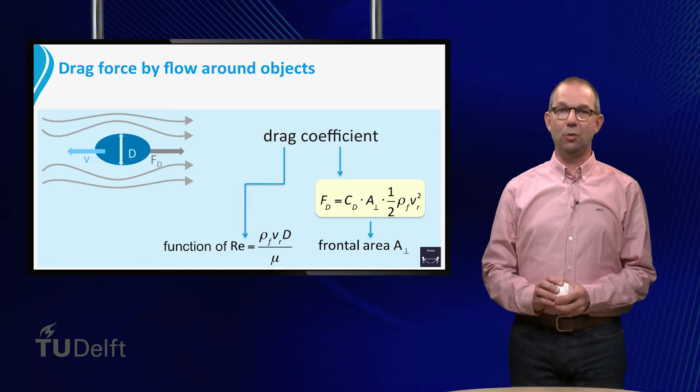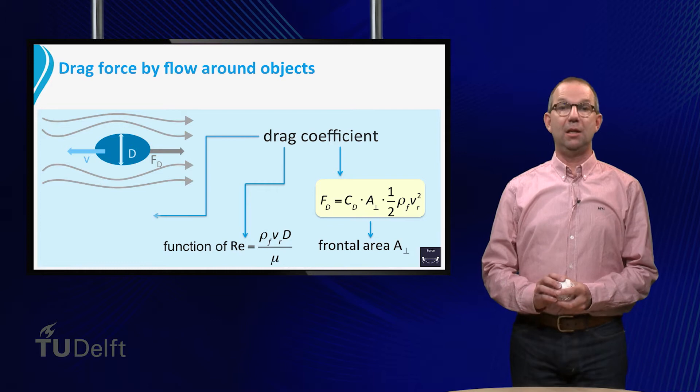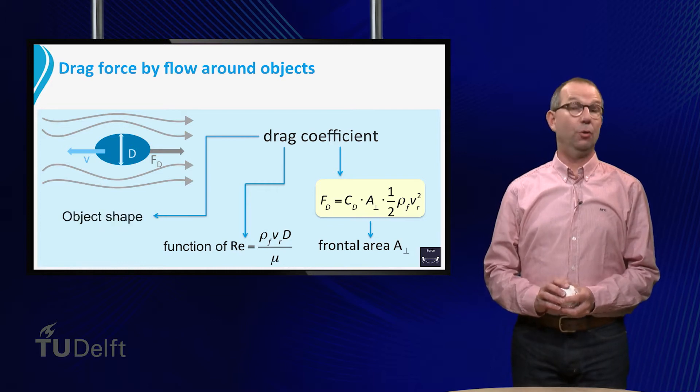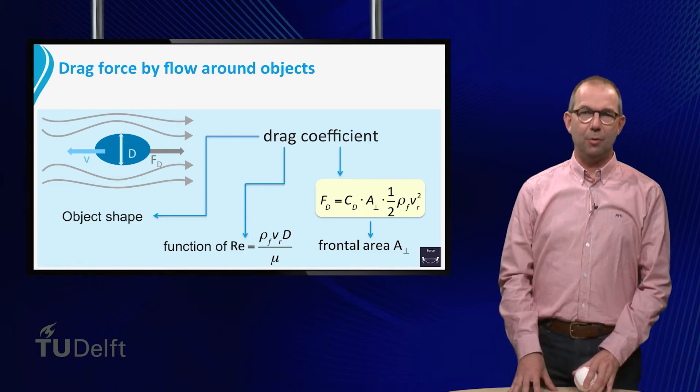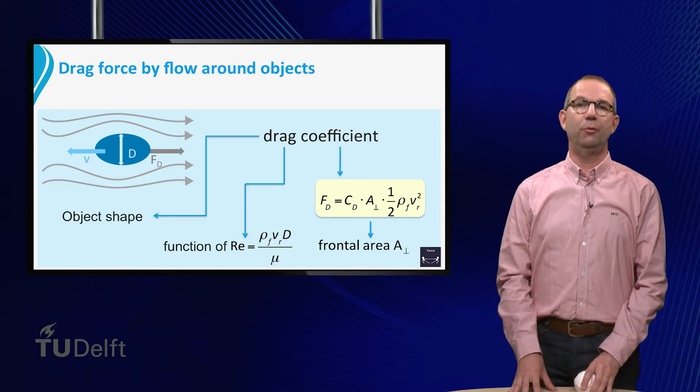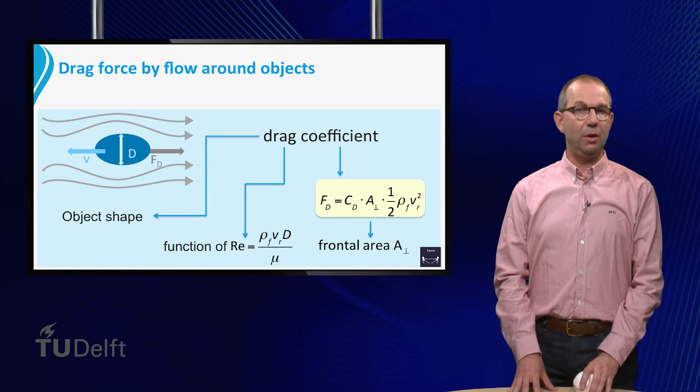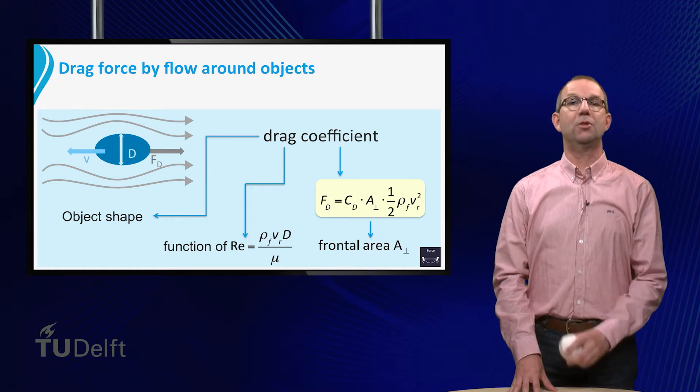CD depends not only on the Reynolds number. It is also different for objects of different shapes. It is virtually impossible to find CD by deriving analytical solutions from the flow equations. Only for low Reynolds numbers and simple shapes like a sphere is this possible.